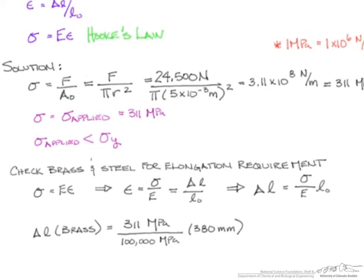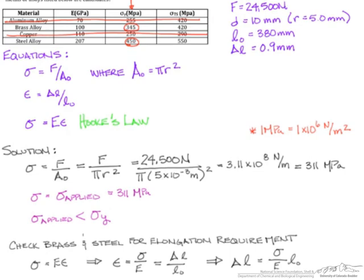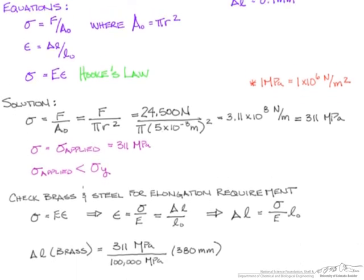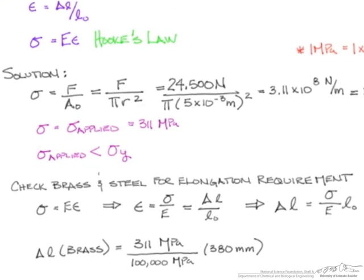our values for Young's modulus are given in gigapascals. So, hence, to be able to convert that to megapascals, that is why we have 100,000 megapascals for this problem. So, if we go ahead and calculate this, we find that our final answer is going to be 1.18 millimeters for brass.